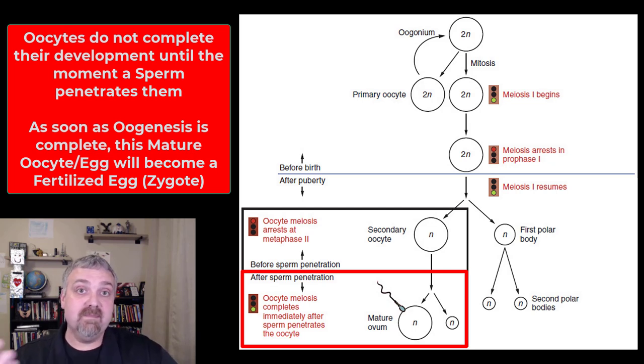Whereas the sperm that produces an offspring has been a sperm for as long as it's been born, the oocyte has not been a fully functional oocyte until the moment of penetration from the sperm. So that's pretty cool.